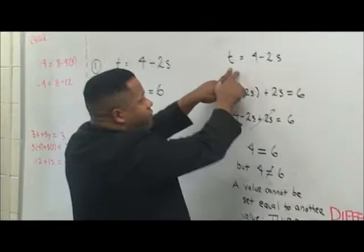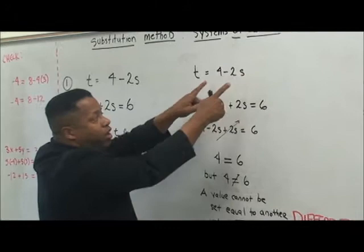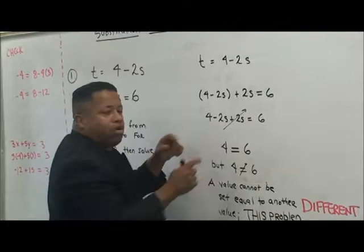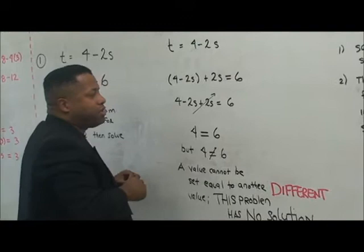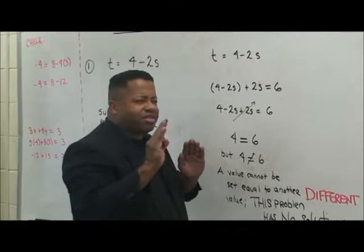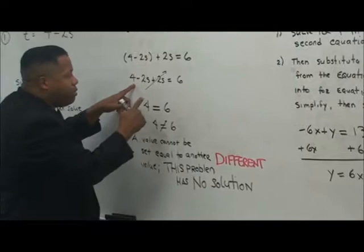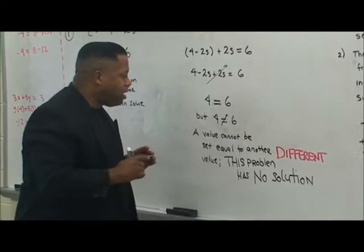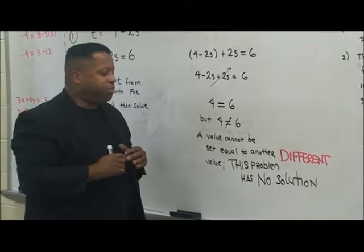We have t is equal to 4 minus 2s. So we're going to take 4 minus 2s and plug it right into the second equation for t. So 4 minus 2s plus 2s is equal to 6. When we simplify, we have 4 minus 2s plus 2s is equal to 6. Negative 2s plus 2s equals 0, so we get 4 equals 6 — but 4 cannot equal 6. This problem will be considered a problem that has no solution.